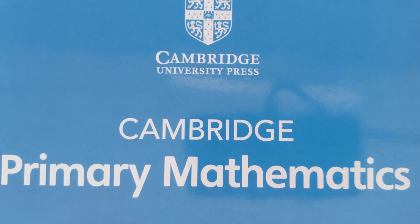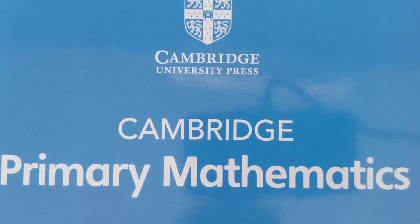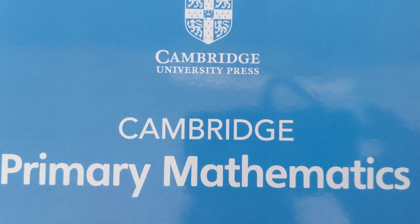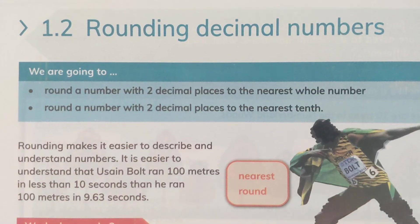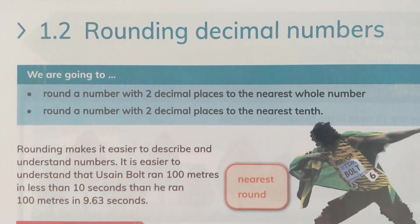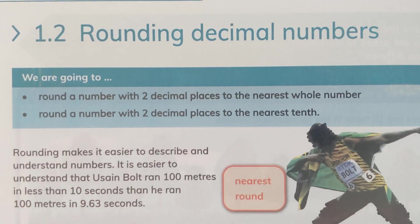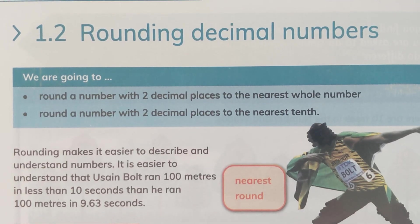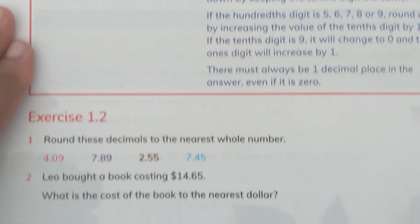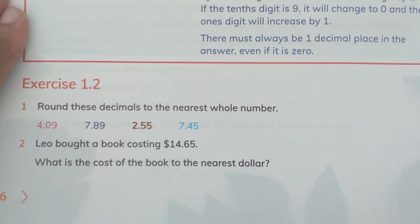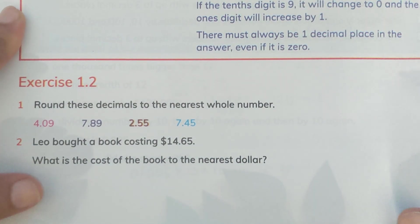Bismillahirrahmanirrahim. Assalamu alaikum, dear students. How are you? I hope you'll be fine. This is Cambridge Prime Day Mathematics Learners Book 6, and today we are going to start with Exercise 1.2. Since we are done with the place value of decimal numbers, now we are going to learn how to round up decimal numbers.